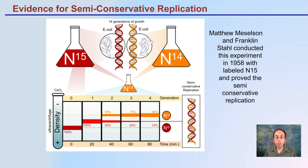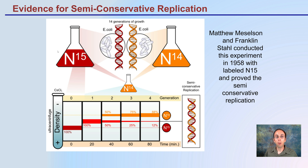Evidence for semi-conservative replication comes from many studies. In one experiment, a radioactively labeled nitrogen base was used to track different densities across generations of E. coli. The results show that semi-conservative replication is occurring because there is a blending effect — a loss in the percent of the original labeled strand — proving that we have semi-conservativeness, with the original parental strand present alongside these new strands.